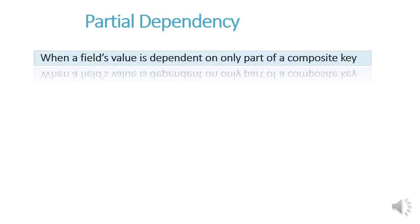A partial dependency is when a field's value is dependent on only part of a composite key. Remember, a composite key is a primary key which contains two or more fields.